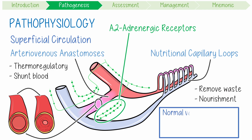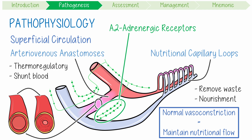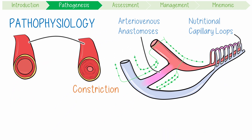Although normal vasoconstriction decreases skin blood flow during cold conditions, we can still maintain nutritional flow via compensatory vasodilation. Vasoconstriction and dilation are mediated by different endothelial mediators, including endothelium-derived nitric oxide, which inhibits vascular smooth muscle contraction. Similarly, prostaglandins, like prostacyclin, are vasodilatory.